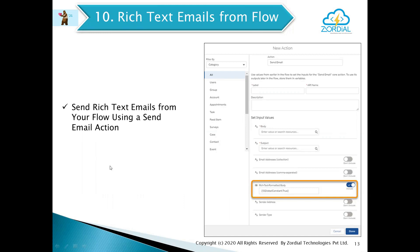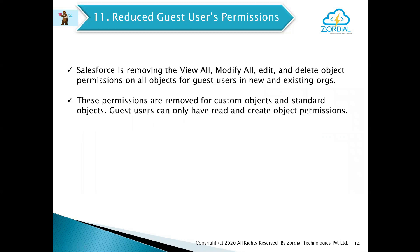The next one is rich text emails from Flow. Now in Flow, whatever email we are sending, we can send it in rich text format. This means we can format the body of the email and send it. Until now we were only able to send emails in plain text format.